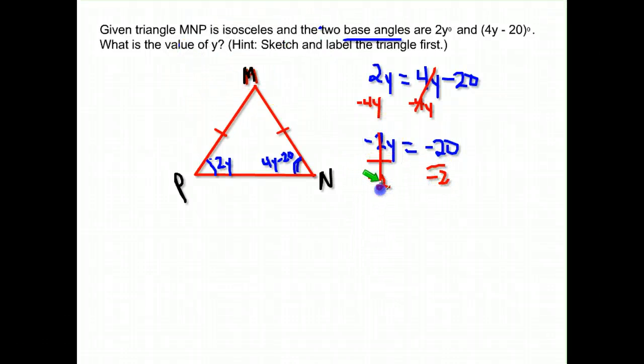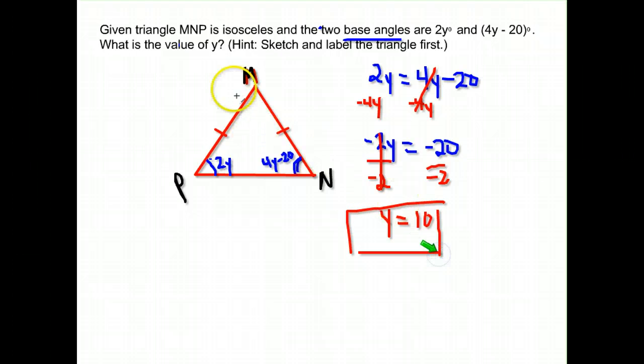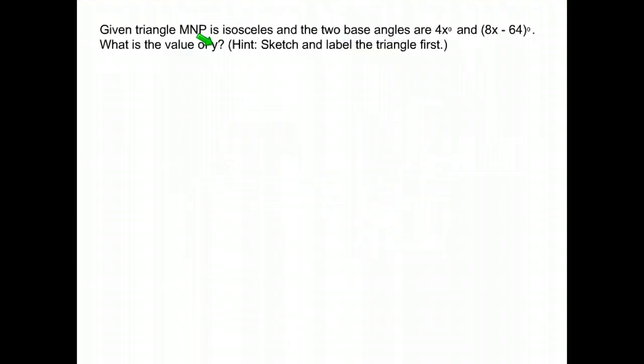Negative 20 divided by negative 2 gives me 10. That is all they asked for—they didn't ask for the measure of the angles, just the value of y. So I'm done: y equals 10. I'm going to go through another example like that.